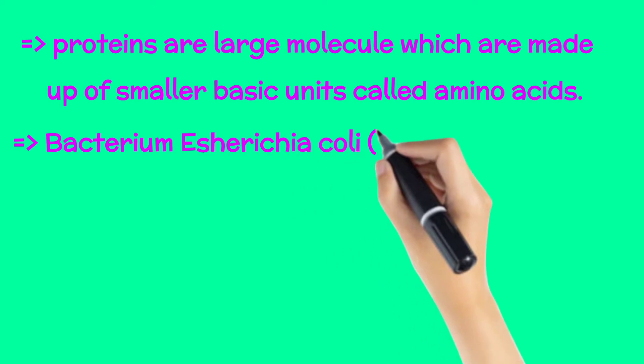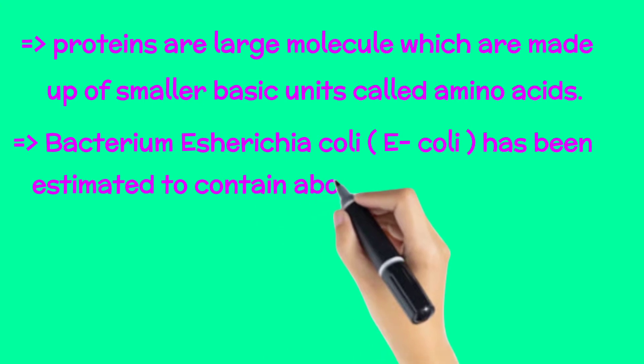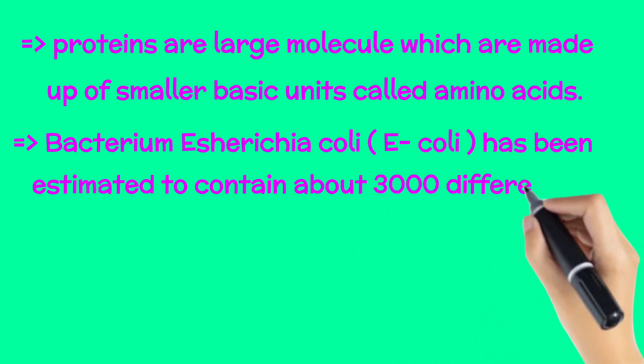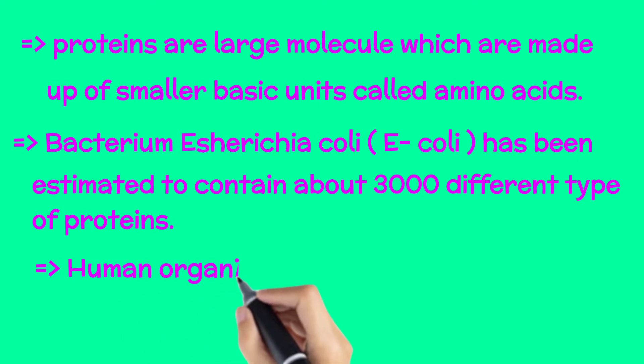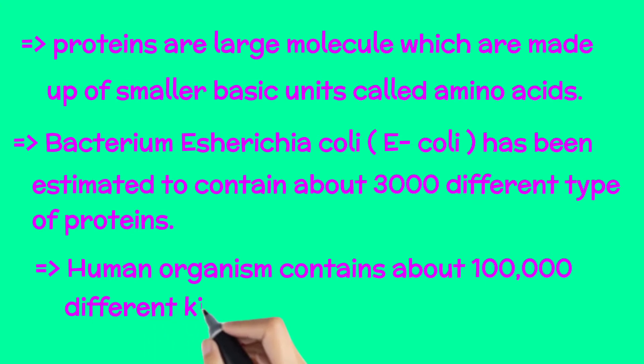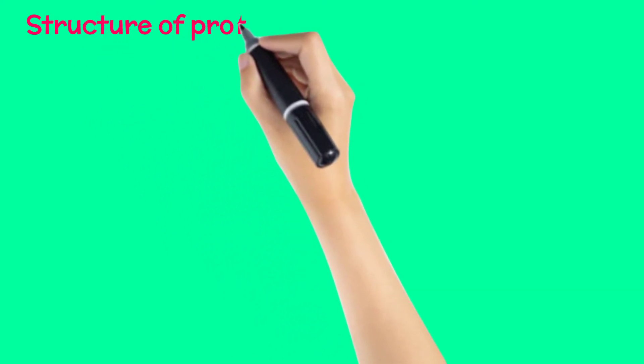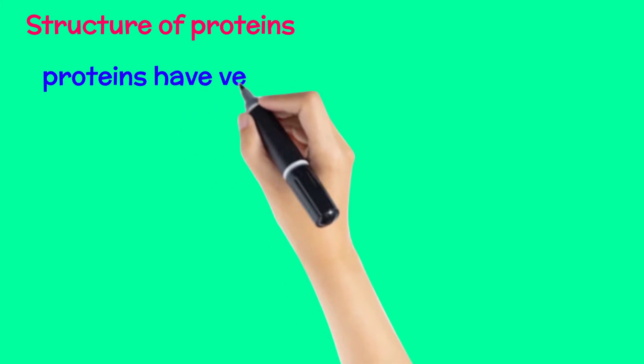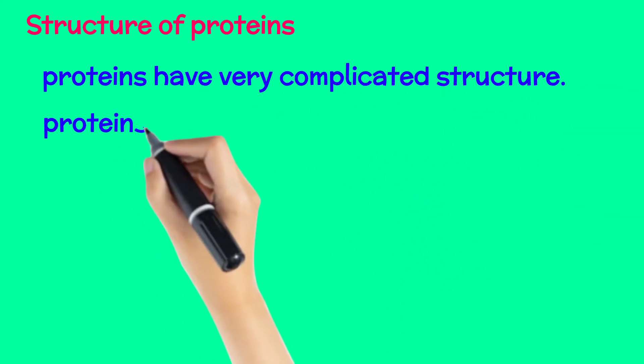Bacterium Escherichia coli has been estimated to contain about 3,000 different types of proteins, and the human organism contains about one lakh different kinds of proteins. Now we come toward the structure of proteins. Proteins have very complex or complicated structure.